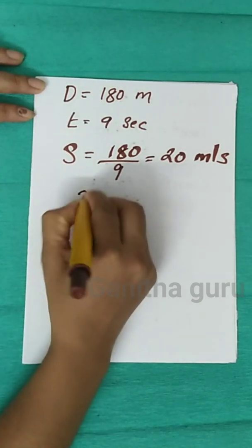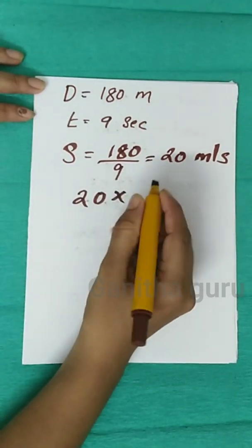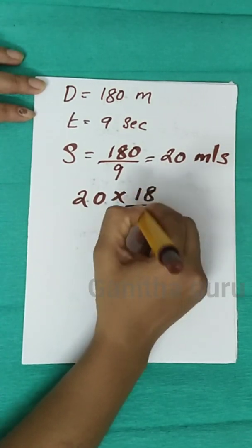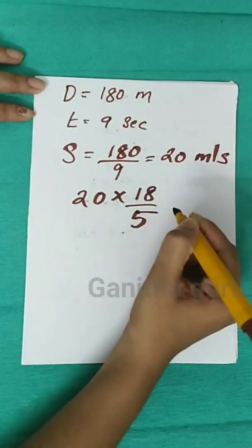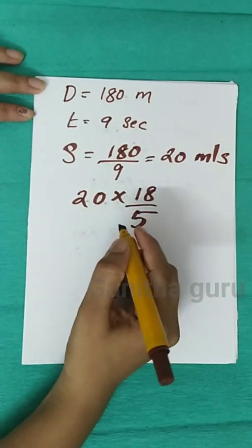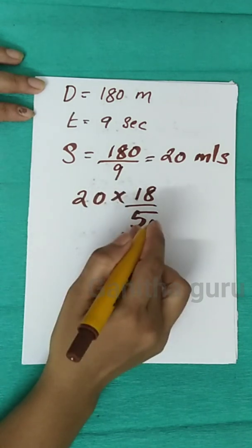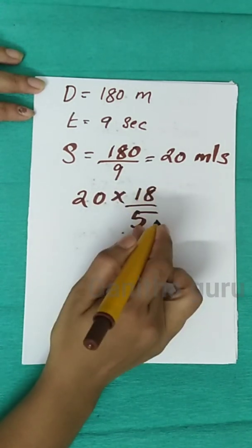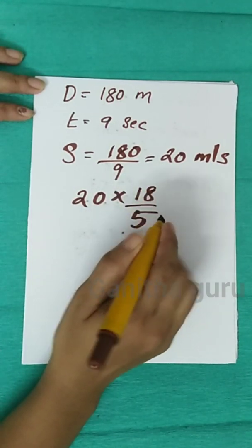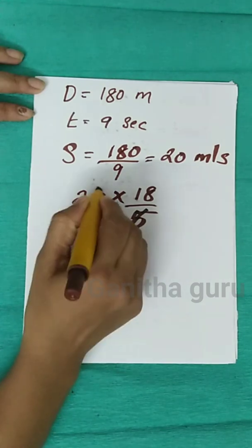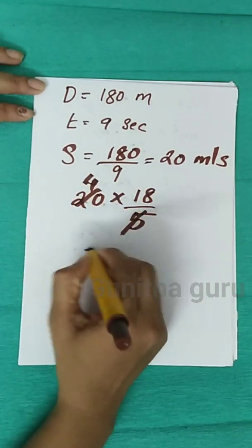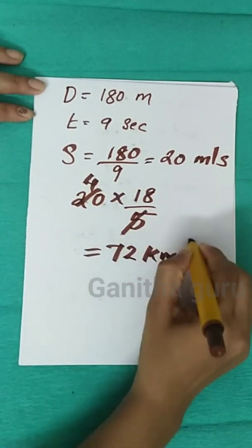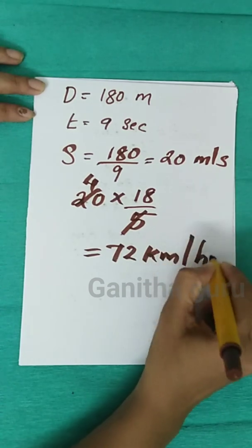We will convert 20 meters per second to km per hour. Multiply by 18 by 5: 20 × (18/5) gives 5, 24, 48, 72 km per hour.